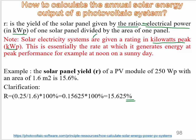Solar electricity systems are given a rating in kilowatt peak. This is essentially the rate at which energy is generated at peak performance — for example, at noon on a sunny day. We calculate the kilowatt peak factor at two conditions: at noon and on a sunny day.